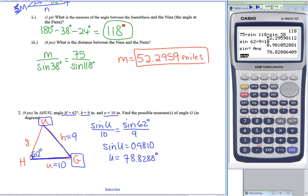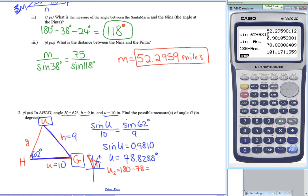Sine is positive in both the first and second quadrants, so I also have to consider whether angle U could be the supplement: 180 minus 78.8288, which equals 101.1711 degrees. Looking at the original triangle, if angle U is 101 degrees, I'd have about 163 degrees total with angle H included, still leaving room for angle G — so both solutions must be considered.